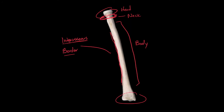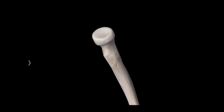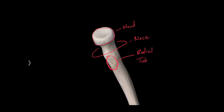Zooming into the proximal end of the radius, we have the head of the radius and the neck. Then we have this rough patch — if we remember what we called the last rough patch, it was called a tuberosity. This is going to be called the radial tuberosity, because it's the tuberosity found on the radius.